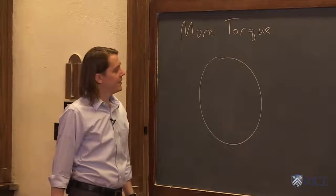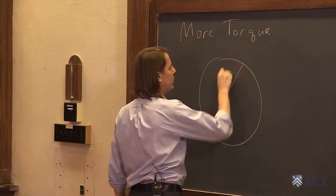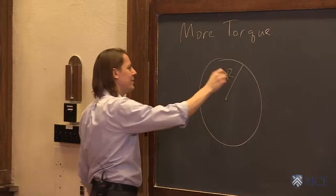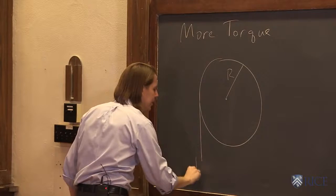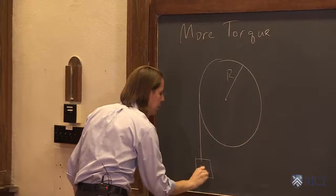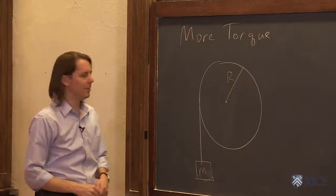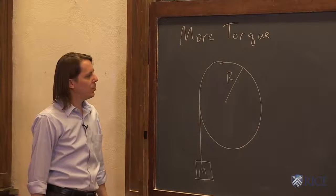Here we have a disc, a round disc, and it has a radius we'll call big R. And we have a string wrapped around the disc, and the string comes off the disc like that with a weight m. A mass hangs from it with mass m, so of course it pulls down with the force mg.